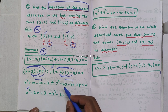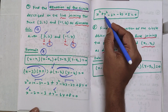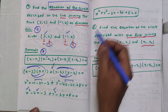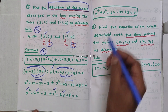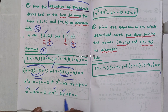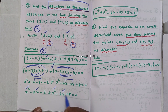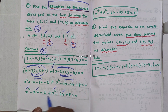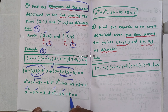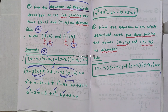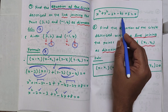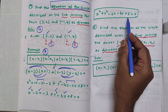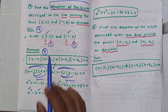Collecting terms: x squared plus y squared, add the x terms minus 2x, add the y terms minus 6y, plus the constant: 8 minus 3 equals 5. So x squared plus y squared minus 2x minus 6y plus 5 equal to zero.